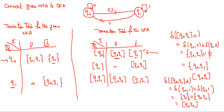Now the two new states generated — {q0, q1} and {q0, q1} — are already discussed. So the new states in the equivalent DFA are q0, q1, and {q0, q1}.